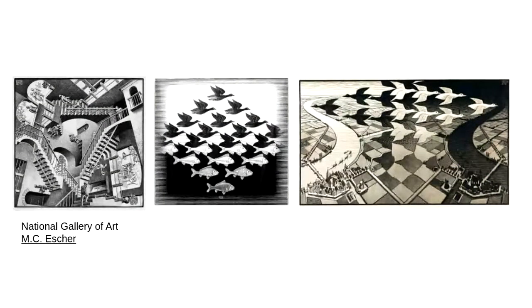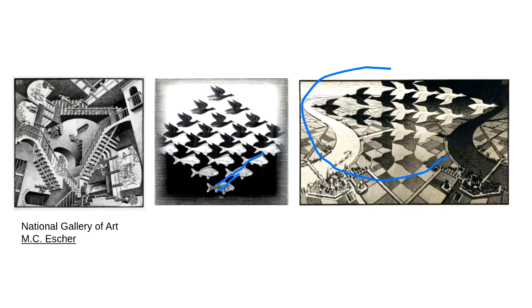This has nothing to do with Islamic architecture directly, but this is M.C. Escher, who was much later — he eventually traveled to Spain, to Alhambra, saw one of these mosques, saw these patterns, and became inspired. You start seeing this idea of repetition, pattern, and positive and negative space. Here you see this fish, and the negative space creates a duck — birds taking flight. The negative space creates ducks and birds flying in the opposite direction. It's very interesting.